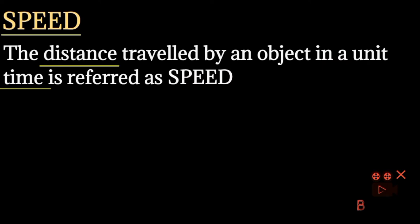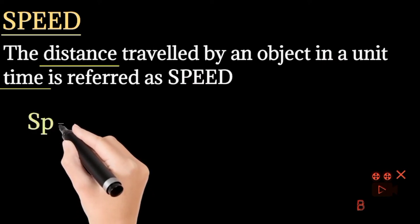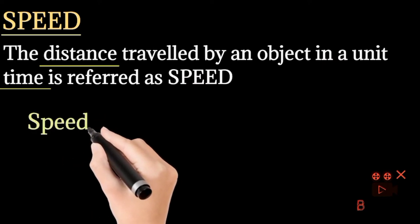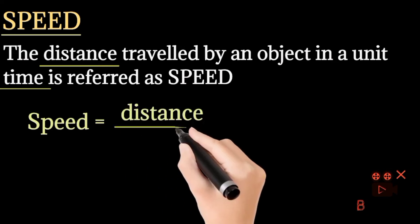And how can we represent speed? What is the formula of speed? We can derive the formula from the definition. So speed equals to what? In short, we can say speed equals to distance by time, distance divided by time.